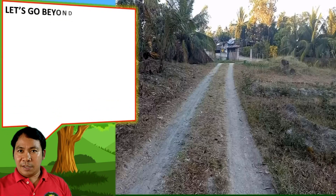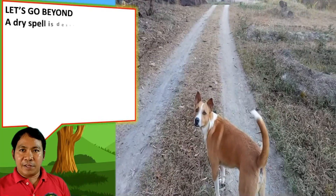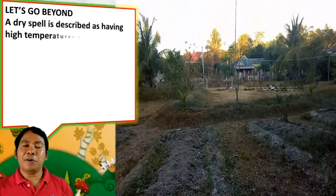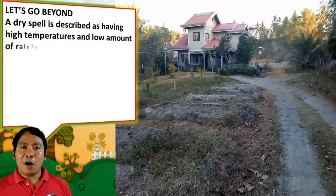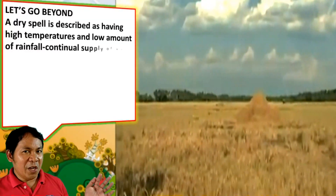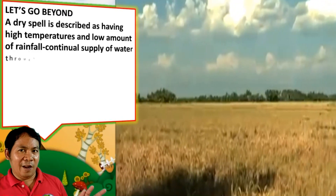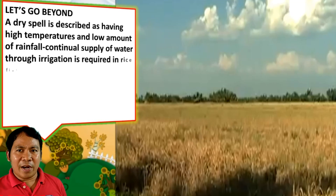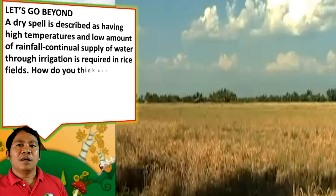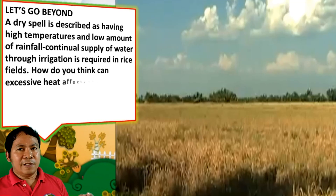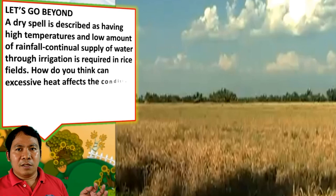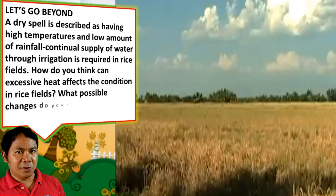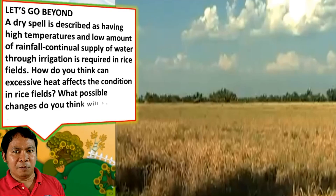Let's go beyond. A dry spell is described as having high temperatures and a low amount of rainfall. A continual supply of water through irrigation is required in rice fields. How do you think excessive heat affects the condition of rice fields? What possible changes do you think will be observed?